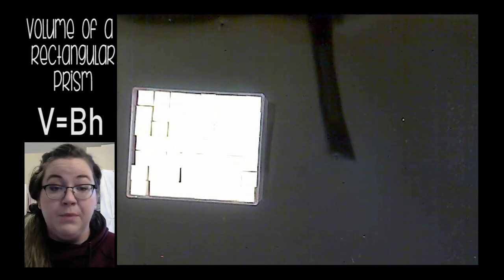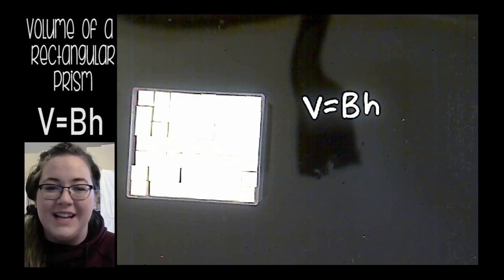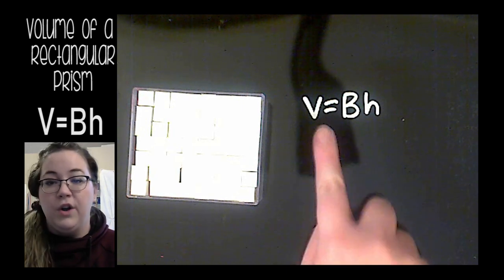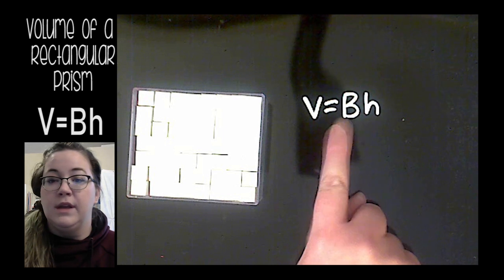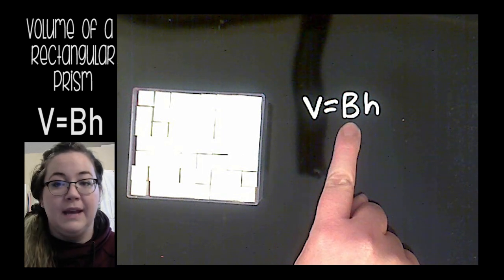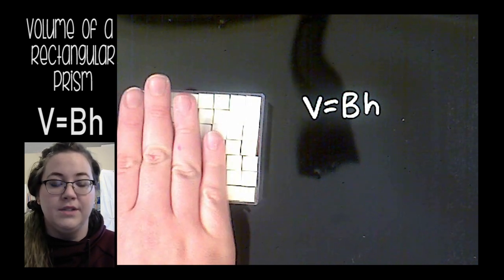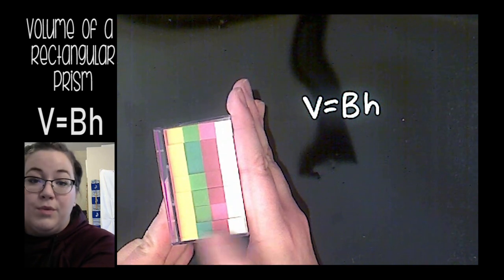The formula for volume of any prism is V equals capital BH. It has to be capitalized because it stands for the area of the base. So the volume of a rectangular prism or any prism equals area of the base times its height. The area of the base, which was that rectangle of 56 cubes, multiplied by the height of the prism.